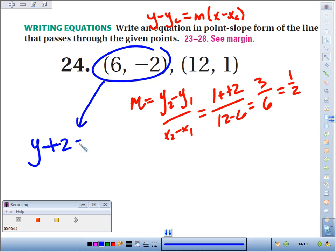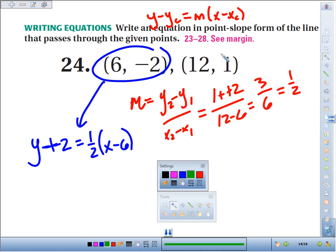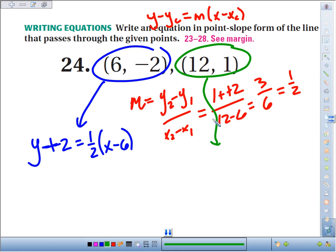If you use the green point that I circled, y minus the y coordinate here is 1 equals our slope 1/2, x minus—what's the x coordinate of this point? It's 12. So the blue answer or the green answer are both possibilities.